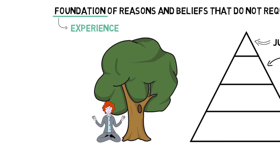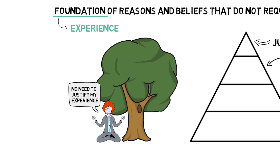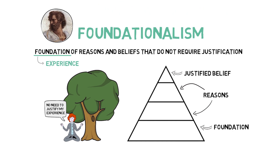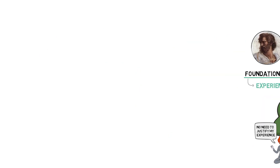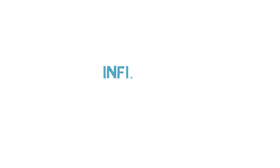When you look out and you see a tree, you have an experience. There's no reason in support of that experience. Your visual experience is your reason for believing you see a tree, but there's no further reason in support of that experience. Foundationalists claim that these foundational beliefs — the ones that end the chain of reasons — stop the regress, and all other beliefs rest on this foundation of justified beliefs.